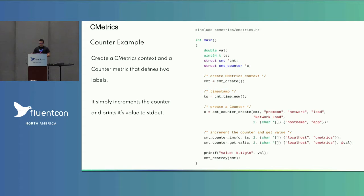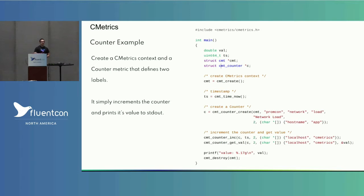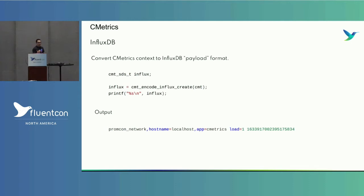Here's how you use cmetrics in C code: you create a context, get a timestamp, create a counter, add labels, then increment it, retrieve the value, and print it to standard output. It's essentially the same thing as the Prometheus Go client — the APIs are not so different and it's pretty much the same number of lines.